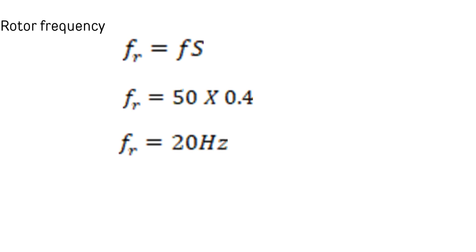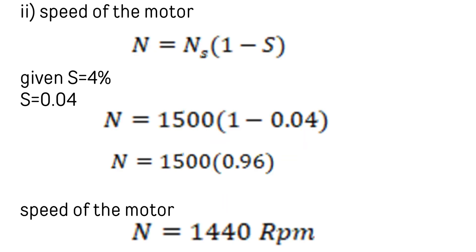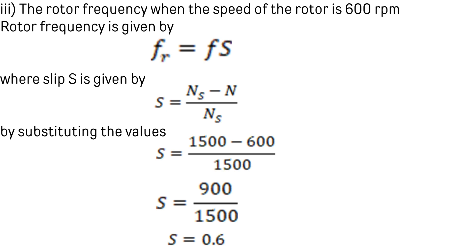Consider another problem: a three-phase induction motor is wound for four poles and supplied from a 50 Hz supply. Calculate the synchronous speed, the speed of the motor when slip is 4%, and the rotor frequency when rotor speed is 600 rpm. Given frequency 50 Hz and poles 4, Ns = 120f/P = 1500 rpm. For 4% slip: N = 1500 × (1 - 0.04) = 1500 × 0.96 = 1440 rpm.